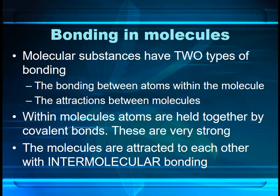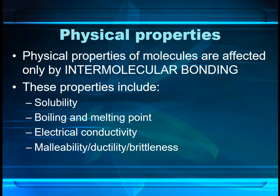When we think about the properties of substances, what we're actually interested in is the bonding between the molecules — between one water molecule and the next. This is called intermolecular bonding. The covalent bonds within the molecule are very strong and very stable, so they don't change and have no real effect on physical properties. The only things that matter are the intermolecular bonds.